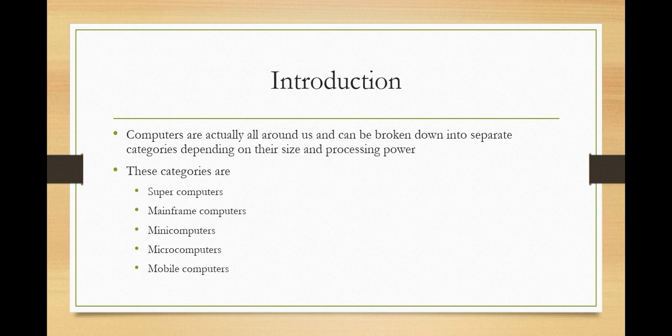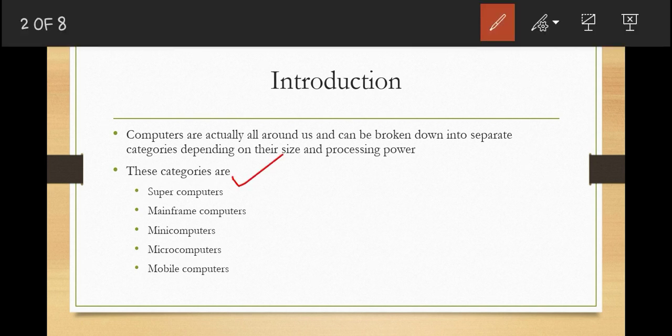There are five main categories of computers. The first is supercomputers. We have supercomputers, mainframe computers, minicomputers, microcomputers, and mobile computers. These are the main categories of computers in this world.